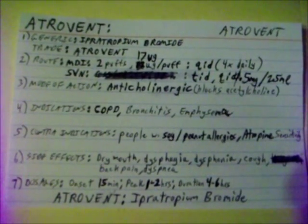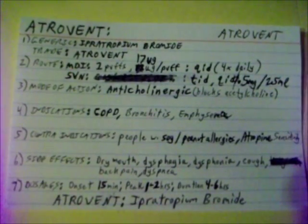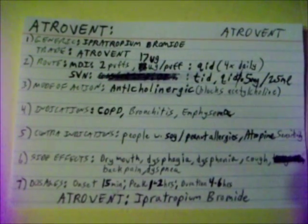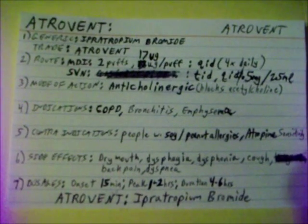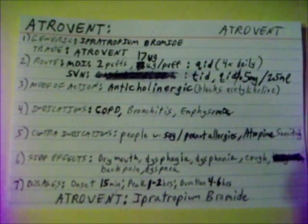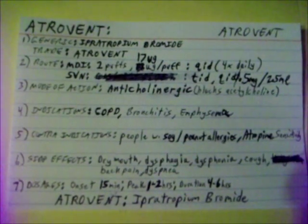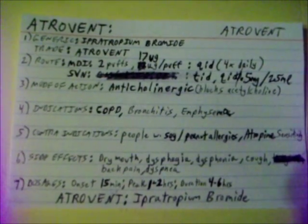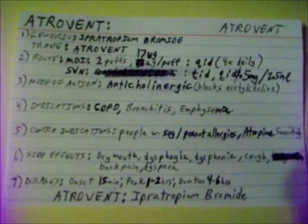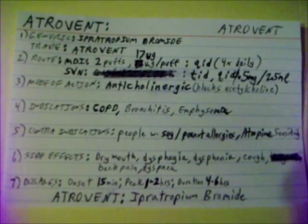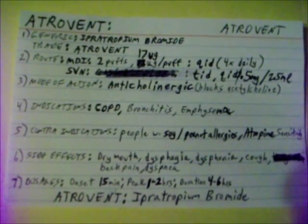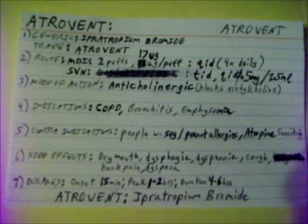Contraindications for Atrovent: patients with soy and peanut allergies and patients with severe atropine sensitivity. Side effects are dry mouth, dysphagia, dysphonia, cough, back pain, and dyspnea. Atrovent's onset is 15 minutes, peak is 1 to 2 hours, and duration is 4 to 6 hours.